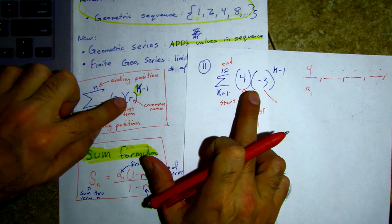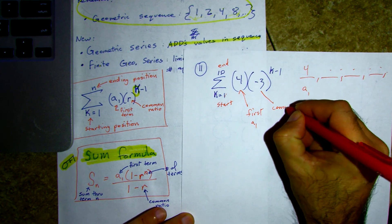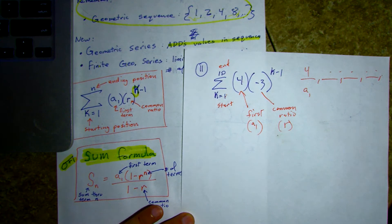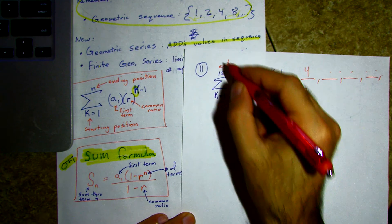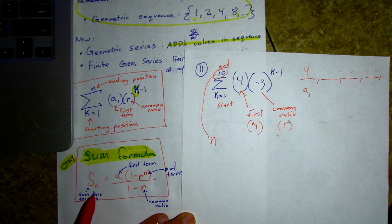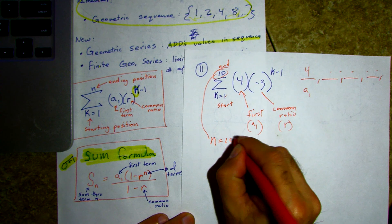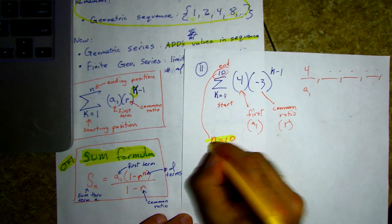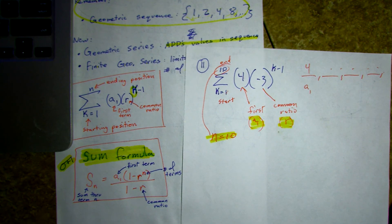The common ratio is negative 3 — that's the r value. So we have our first term and our r value, and those are the main things I need. My n value is 10, which tells me we're summing through term n, ending at term 10. We need these three pieces of information: the n term we stop at, the first term, and the ratio.